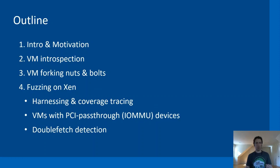What we'll talk about today: I will walk you through an intro and motivation for why we are doing this, what VM introspection is, and how VM forking works. Then we'll look at various fuzzing scenarios on Xen, how to set up harnessing and coverage tracing, how to fuzz kernel modules of devices passed through via PCI pass-through, and also how to detect double fetches.